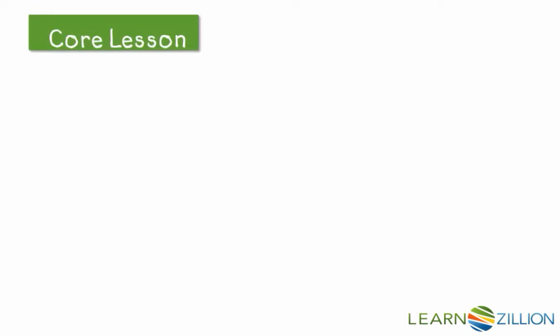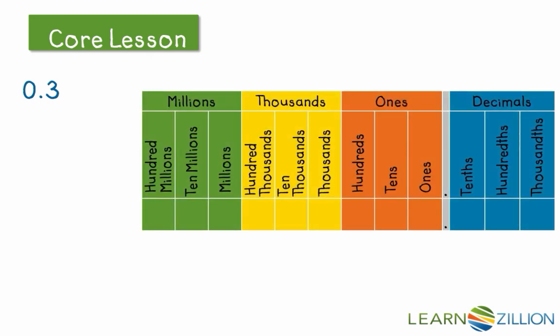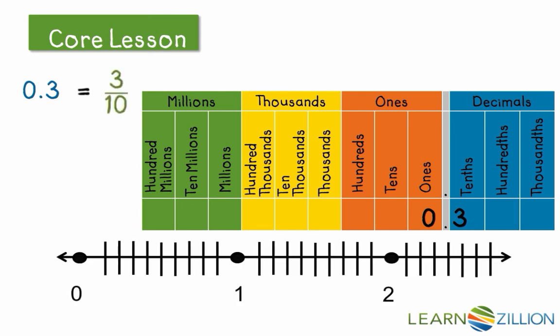So let's actually take a look at that first value, 3 tenths. And you can probably even hear how it sounds like a fraction. Sometimes you might even hear people say 0.3, and it means the same thing. So even by hearing it, you can probably write it, but let's actually take a look at what this would look like on a place value chart. Our value right now says 0 wholes, or 0 ones. Then we have the decimal point, and then the 3 falls right into that tenths category. So it's 3 tenths, or 3 out of 10, which would look like this: 3 tenths.